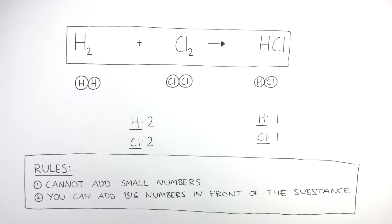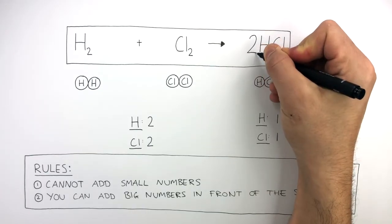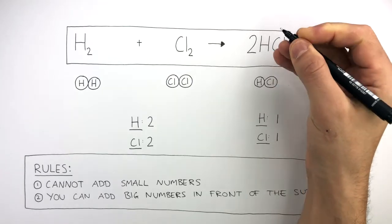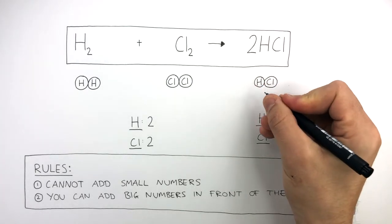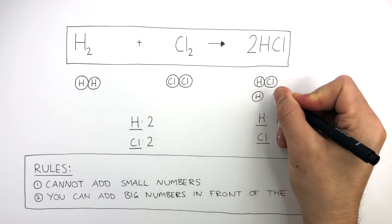What you can do is add a big number in front of the substance. So you can put a big two or a big three in front of the H₂, Cl₂, or HCl to balance the symbol equation. When we put a big two in front of the HCl, this multiplies the number of hydrogen chloride molecules, so there would now be two hydrogen chloride molecules.